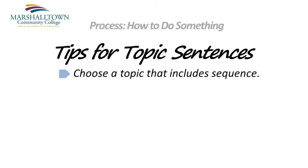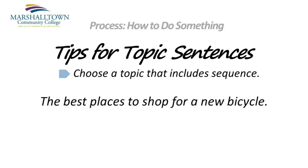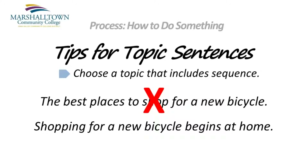Let's take a closer look at what I mean by choosing a topic that includes a sequence. In my sample paragraph for How to Do Something, I explain to readers the steps they should take when shopping for a new bicycle. The first topic sentence I wrote sounded like this: The best places to shop for a new bicycle. Now, this sentence is certainly related to the topic of shopping for bicycles, but it implies that my paragraph is mostly about reviewing local bike shops. That's not really the purpose of my paragraph, so I'm going to rewrite this topic sentence. Shopping for a new bicycle begins at home. The important difference here is the word begins, which is just enough to let the reader know that I'm talking about a process or a sequence of events.